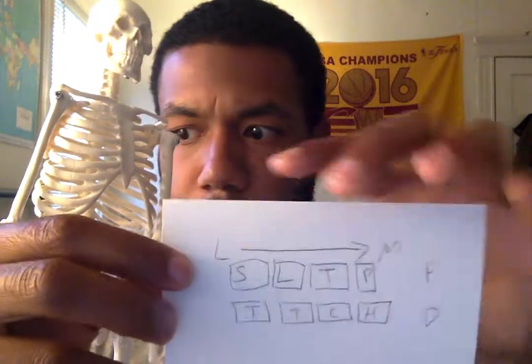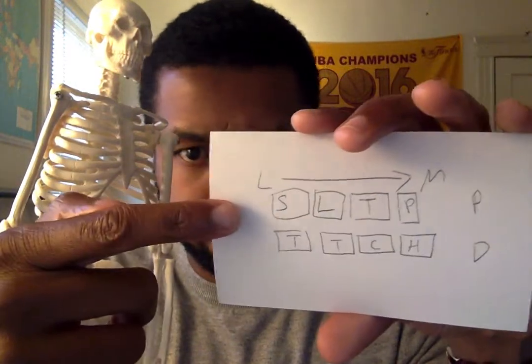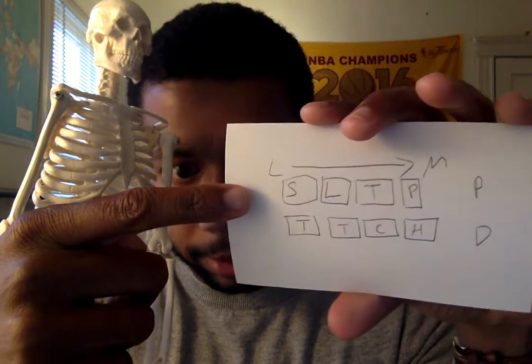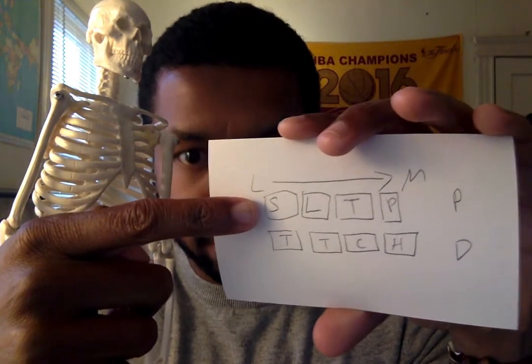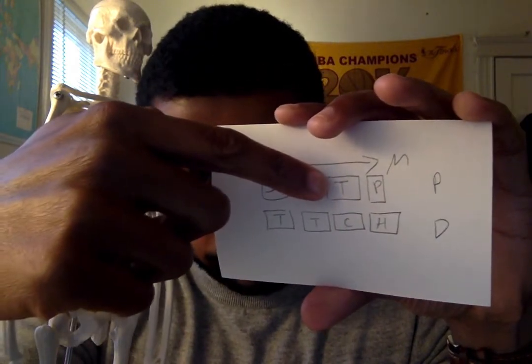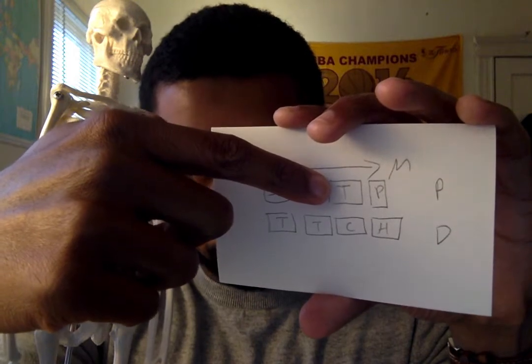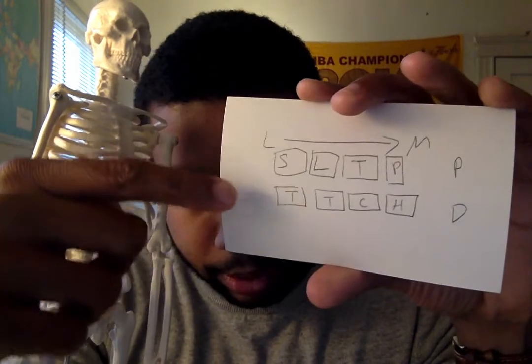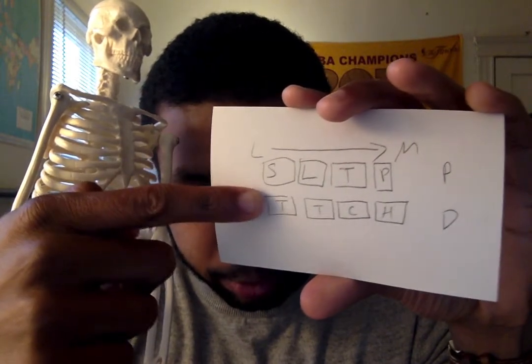Then you have the carpal bones. Proximally, you have the scaphoid, the lunate, the triquetrum, and the pisiform. Distally, you have the trapezium, the trapezoid, the capitate, and the hamate. These connect to the five metacarpals. The metacarpals attach to fourteen phalanges — two phalanges in the thumb and three on each of the other fingers.